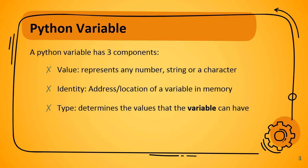Finally, the third component is the type of a variable. It determines the values that a variable can have. Whenever we declare a variable with some value, Python automatically allocates the data type associated with it — that is a specialty of the Python programming language.